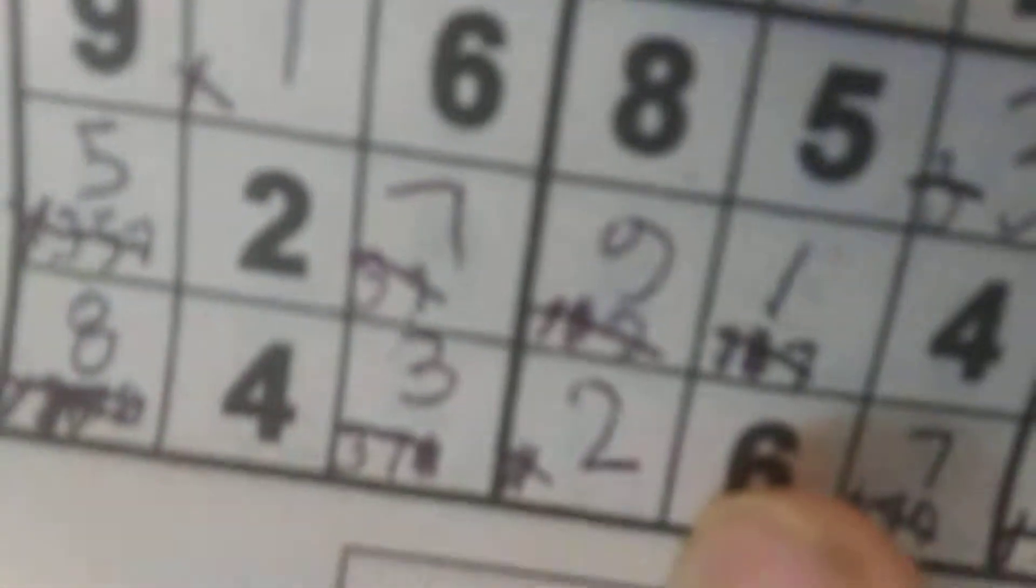I write the number down that could be possible in the blank space. I write them all down. And I cross them out as I eliminate them. That's cheating step one.